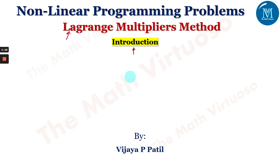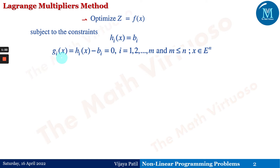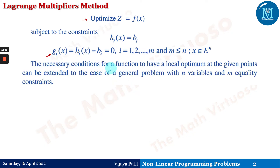We will go into detail of the Lagrangian multiplier method. Suppose we have to optimize z equals f of x as the objective function, subject to the constraints h_i(x) = b_i. Then g_i(x) is nothing but h_i(x) minus b_i, meaning the constraint can be rewritten as g_i(x) = 0. The necessary condition for a function to be a local optimum can be extended to the case of a general problem with n variables and m equality constraints.